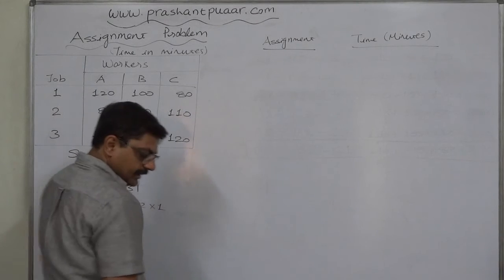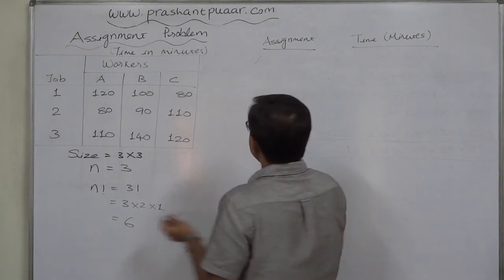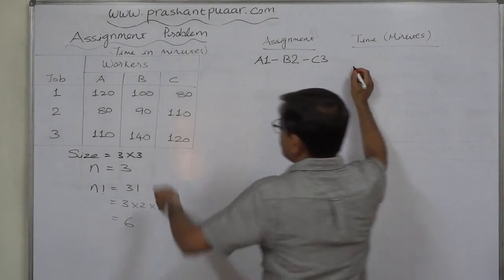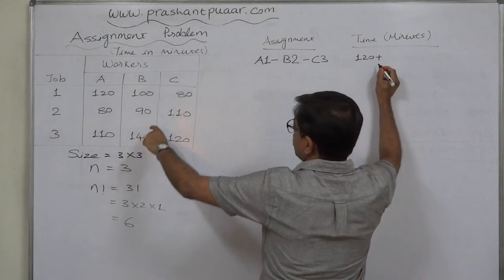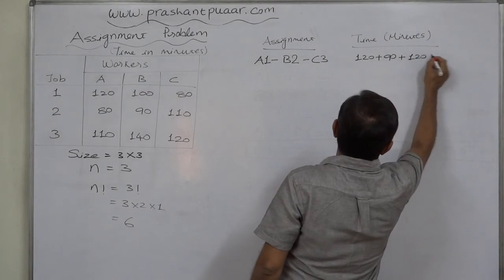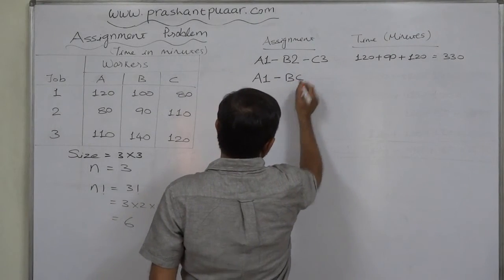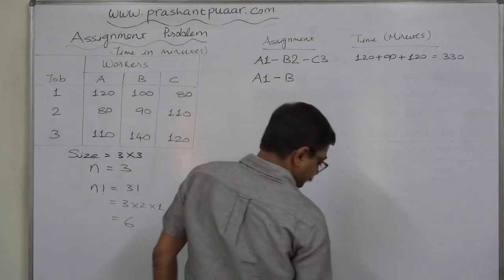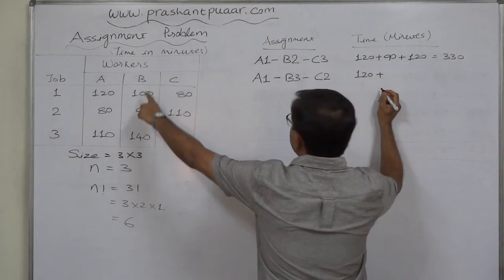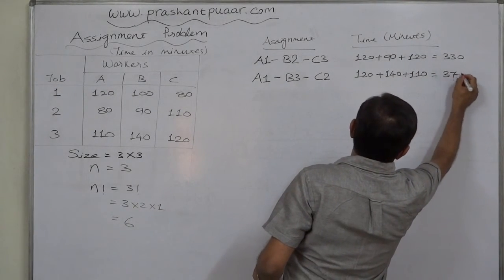Let us list these assignments. First, job 1 is given to A, job 2 to B, and job 3 to C. The time is 120 minutes by A, plus 90 minutes by B, plus 120 minutes by C — total 330 minutes. Second assignment: A gets job 1, B gets job 3, and C gets job 2. The time taken is 120 minutes for A, plus 140 minutes for B, plus 110 minutes for C — total 370 minutes.